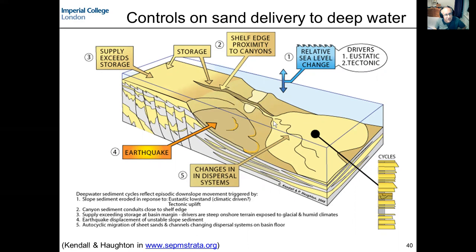One thing would be sediment supply — how much sediment are we feeding onto the shelf? Relative sea level controls accommodation, but in any sequence stratigraphic model we also need to think about sediment supply. That will determine how rapidly we're able to feed shorelines, including deltas, out to the shelf edge. We also need to think about the location of canyon systems; if canyons are part of this mechanism to get submarine fans on the seabed, canyons don't occur everywhere — they occur in specific locations.